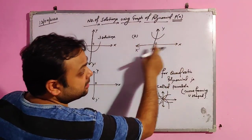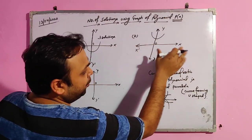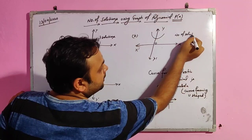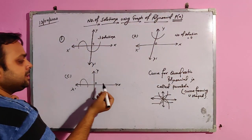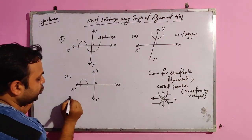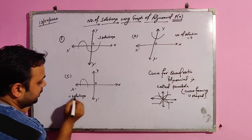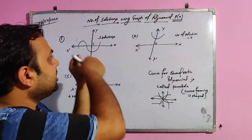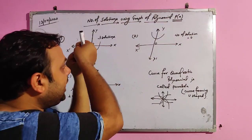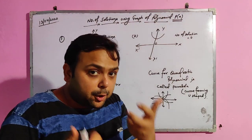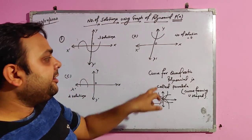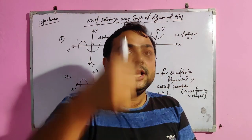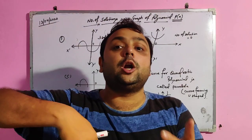If the curve does not cut the x-axis at any point, the number of solutions is 0. If it cuts at two points, there are two solutions. The graph tells us how many points the curve is cutting the x-axis, giving us the number of solutions. For a quadratic polynomial, the curve produced is a U-shaped curve called a parabola.